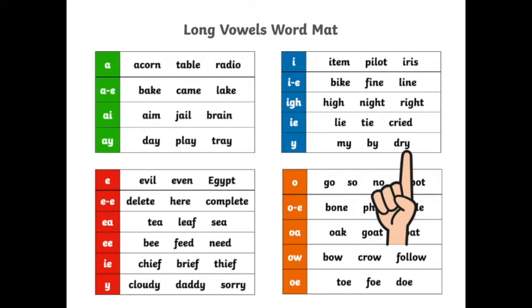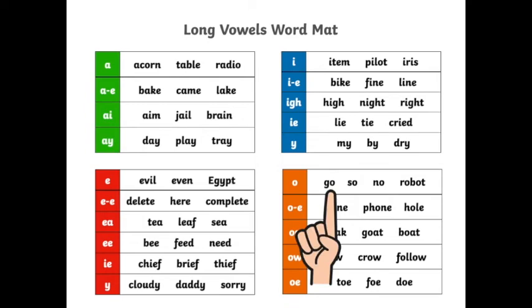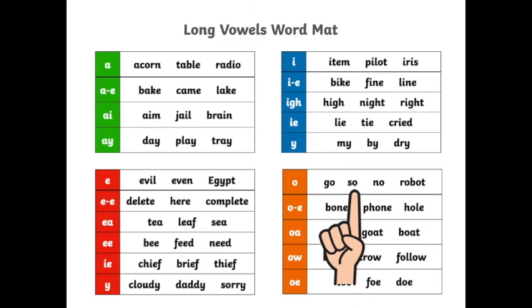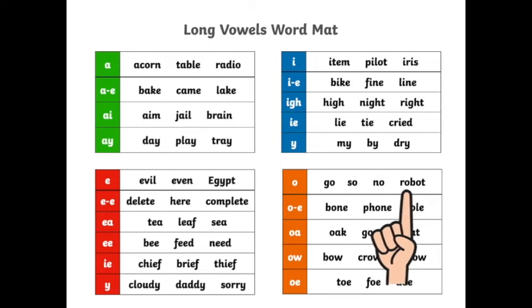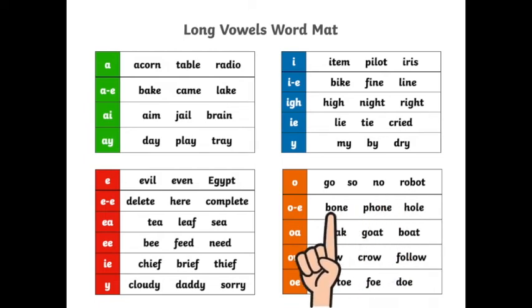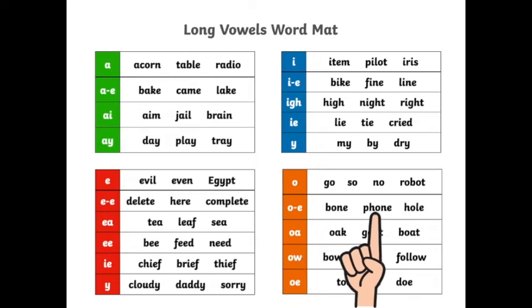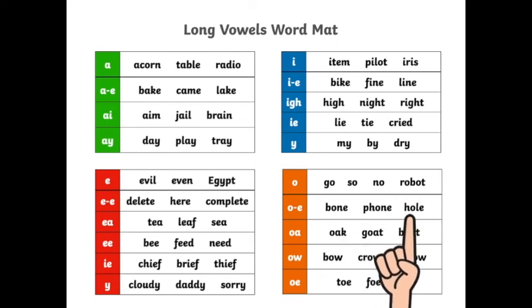Let's go to the orange table and read some words containing O. G-O: Go. T-O: So. N-O: No. R-O: Robot. T-O-N: Tone. H-O-L: Hole.